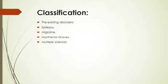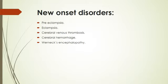Neurological disorders in pregnancy are classified into pre-existing disorders — epilepsy, migraine, myasthenia gravis, and multiple sclerosis — and new onset disorders — pre-eclampsia, cerebral venous thrombosis, and cerebral hemorrhage. Pre-eclampsia and eclampsia are also causes of neurological complications.